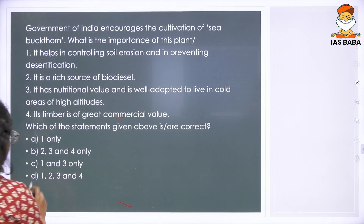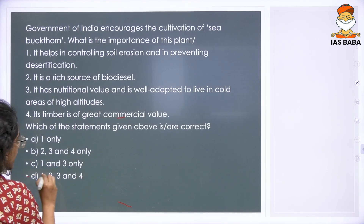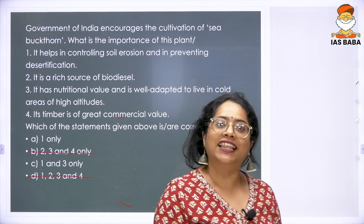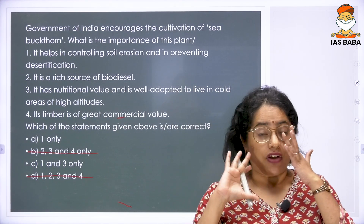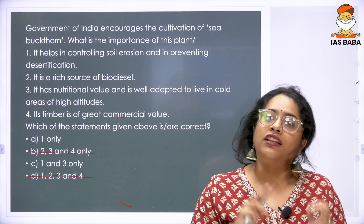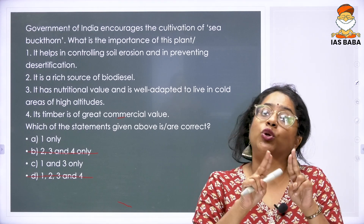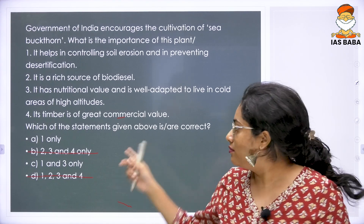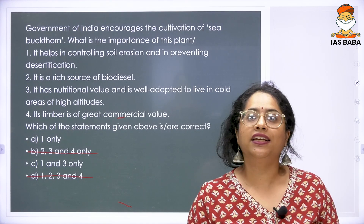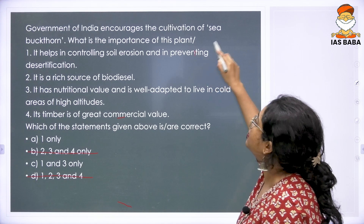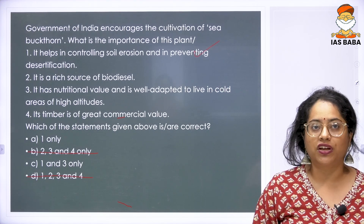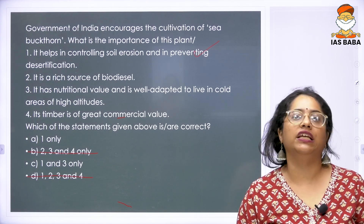Based on that, let us see where 3 and 4 come together — that is in option D. I am eliminating it. Once I eliminate options where 3 and 4 appear together, B is gone and D is gone. What I am left with is A and C. In A and C, I observe that statement 1 is correct — it helps in controlling soil erosion and preventing desertification. I just now have to figure out if statement 3 is correct.